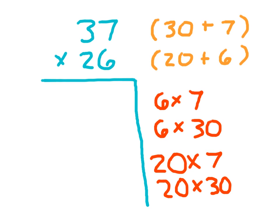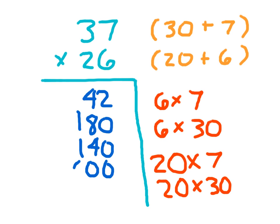If we now actually write out all of these products, what they're equal to: 6 times 7 is 42, 6 times 30, 6 times 3 tens, that's 6 times 3 which is 18 and we have that 0 there. 20 times 7 is 140. And 20 times 30, there's two 0s there, and then 2 times 3 is 6. And we made sure to line up our digits.